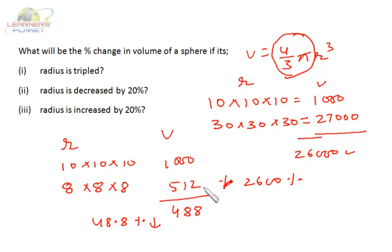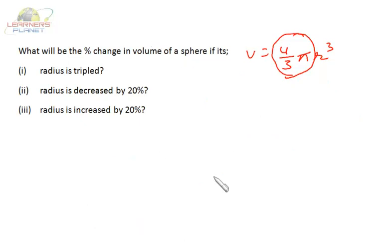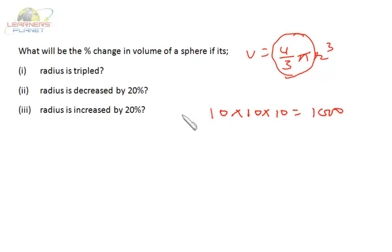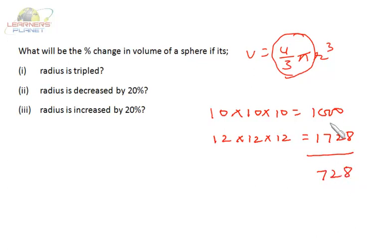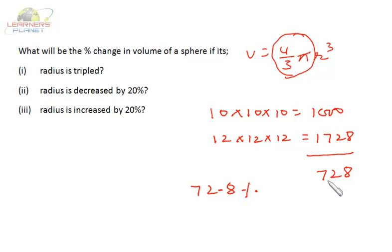If radius is increased by 20% (new radius = 12), volume = 12 × 12 × 12 = 1728. Increase = 728 on base 1000, so on 100 that is 72.8. Therefore, if radius is increased by 20%, the volume of the sphere increases by 72.8%. Remember: we get the difference from 1000, so to convert to percentage we divide by 10.